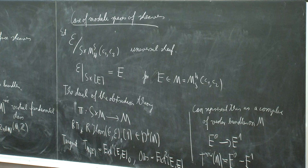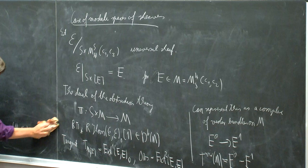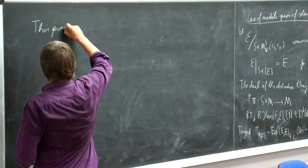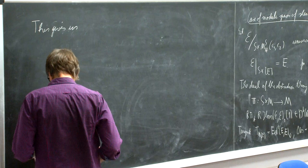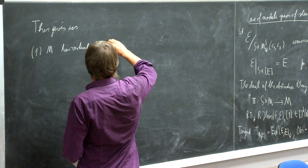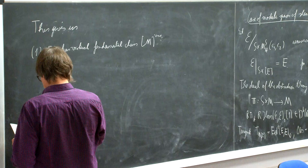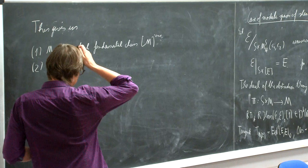By what I told you about this general thing about virtual smooth varieties and obstruction theories, this gives us a certain package of things. Namely, M has a virtual fundamental class in the correct dimension, and we can integrate. We have the virtual tangent bundle, so the virtual Euler number of M is the integral over the virtual fundamental class.